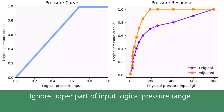This curve ignores the upper part of the input logical pressure range. Look at the impact it has on the pressure response — the flat region at the top has a very different width when comparing the pressure curve to the pressure response, again due to the original shape of the pressure response. The new pressure response is ignoring a huge amount of the physical pressure range, leaving about 200 gram force of pressure range to work with after the curve is applied. This smaller pressure range means it will be harder to control stroke width because the pen will feel more sensitive to small changes in physical pressure.